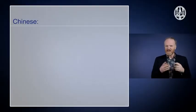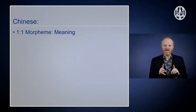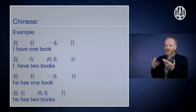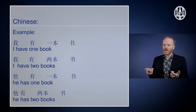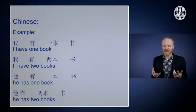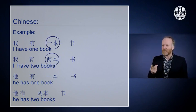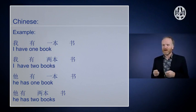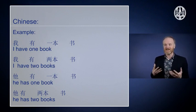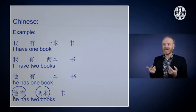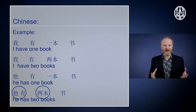In Chinese, there's a one-to-one, almost a one-to-one relationship between morpheme and meaning. Here you see an example of four Chinese sentences. And what you can see is that between I have one book and I have two books, two things change in English. One changes into two and book changes into books. But in Chinese, only one thing changes. Similarly, between I have one book and he has one book. Only one thing changes, although two things change in English. And two things change in Chinese, but only between I have one book and he has two books. When two parts of the idea change.